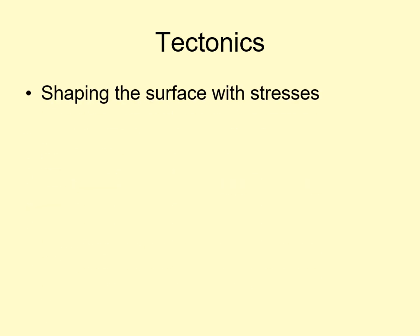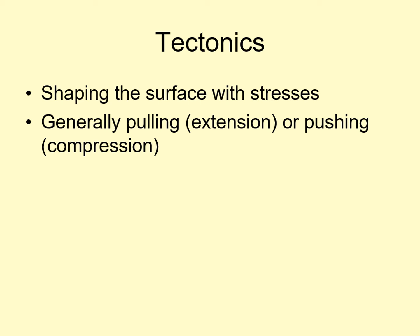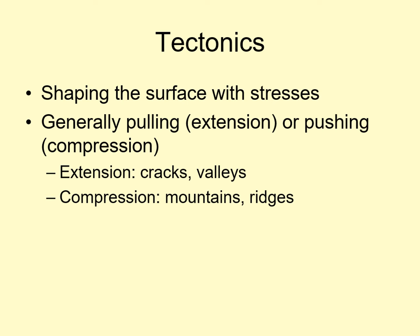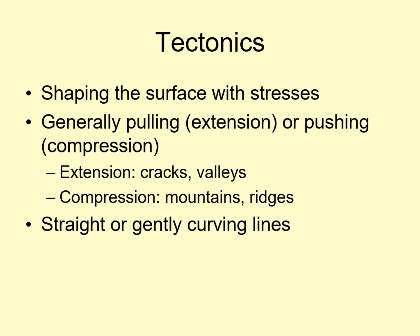The next major geologic process is tectonics. Tectonics means shaping the surface of a world with stresses — in other words, pushing or pulling on the surface. When the surface is being pulled apart, we call this extensional tectonics, which typically produces cracks or valleys on a planet's surface. When the surface is being pushed together, we call that compressional tectonics, which usually leads to forming mountain ranges and ridges. Either way, the surface features produced by tectonics tend to be linear — straight or gently curving lines on the large scale.